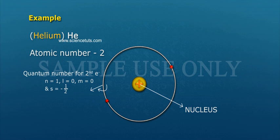Quantum numbers for the second electron: n equals 1, l equals 0, m equals 0, and s equals minus half.